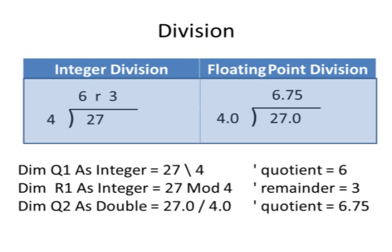When I'm doing floating point division, such as working with doubles, 27 divided by 4, the quotient is 6.75. I don't have any remainder, but I do have digits past the decimal when I'm working with floating point using the double data type.